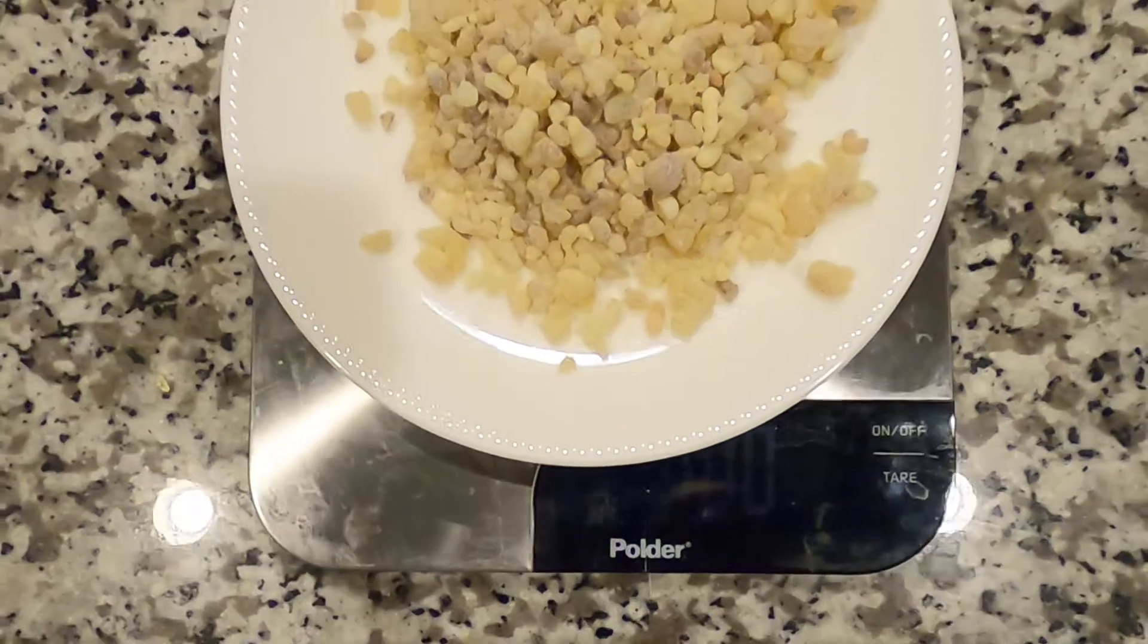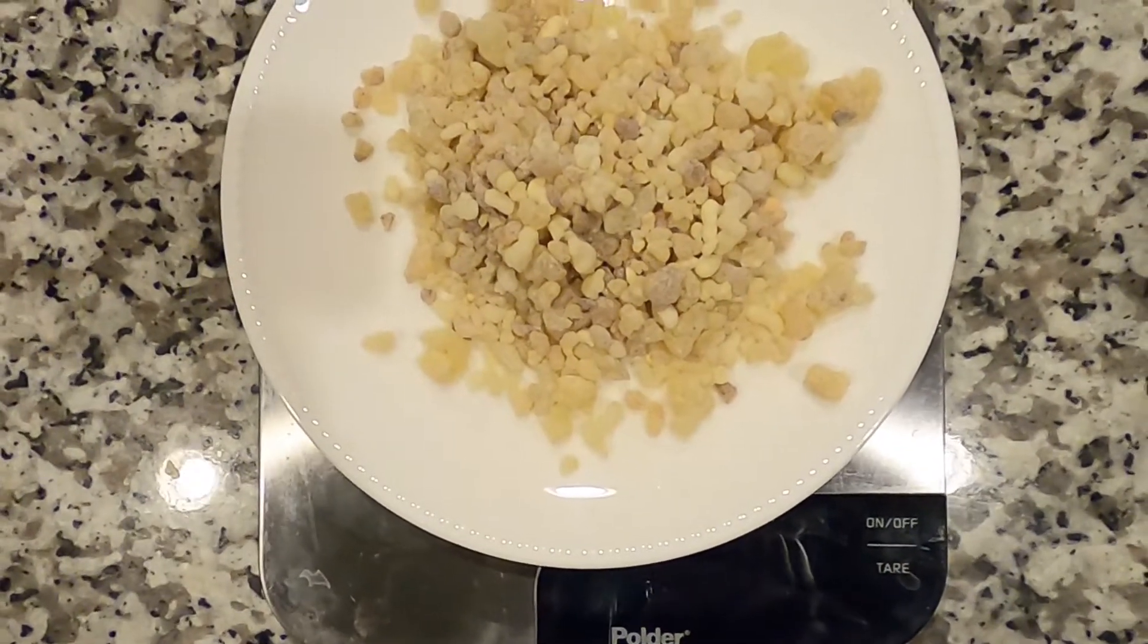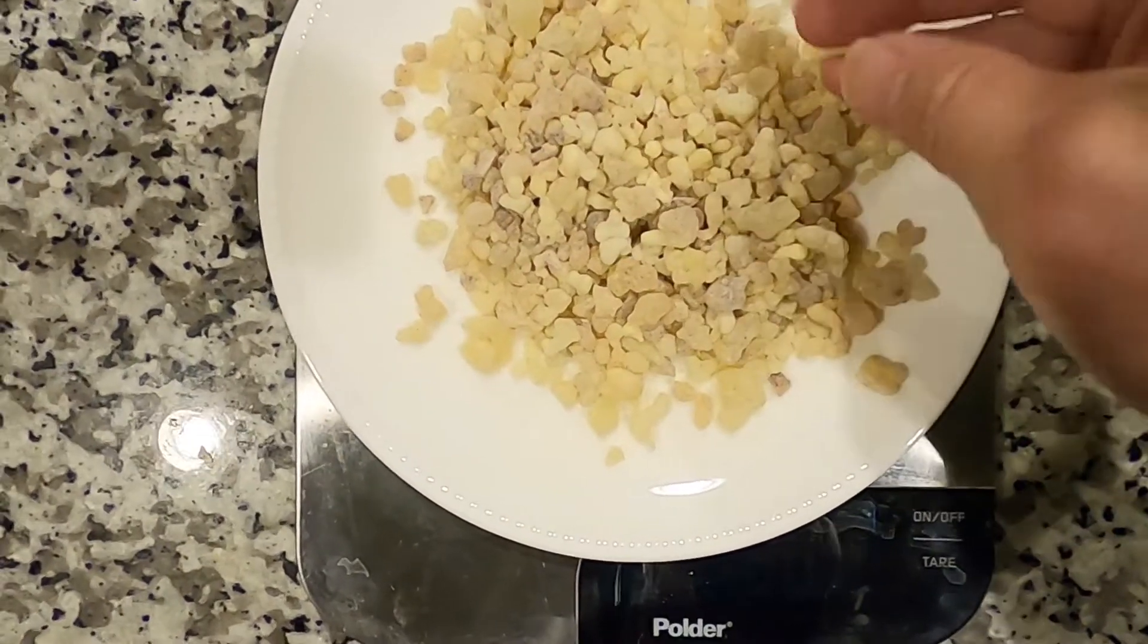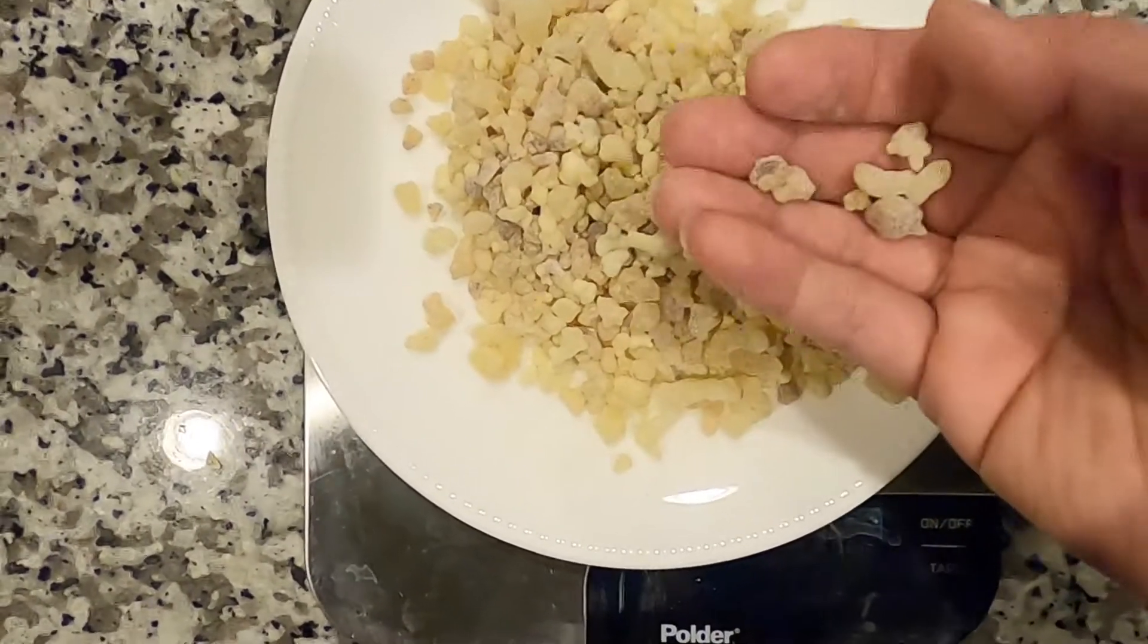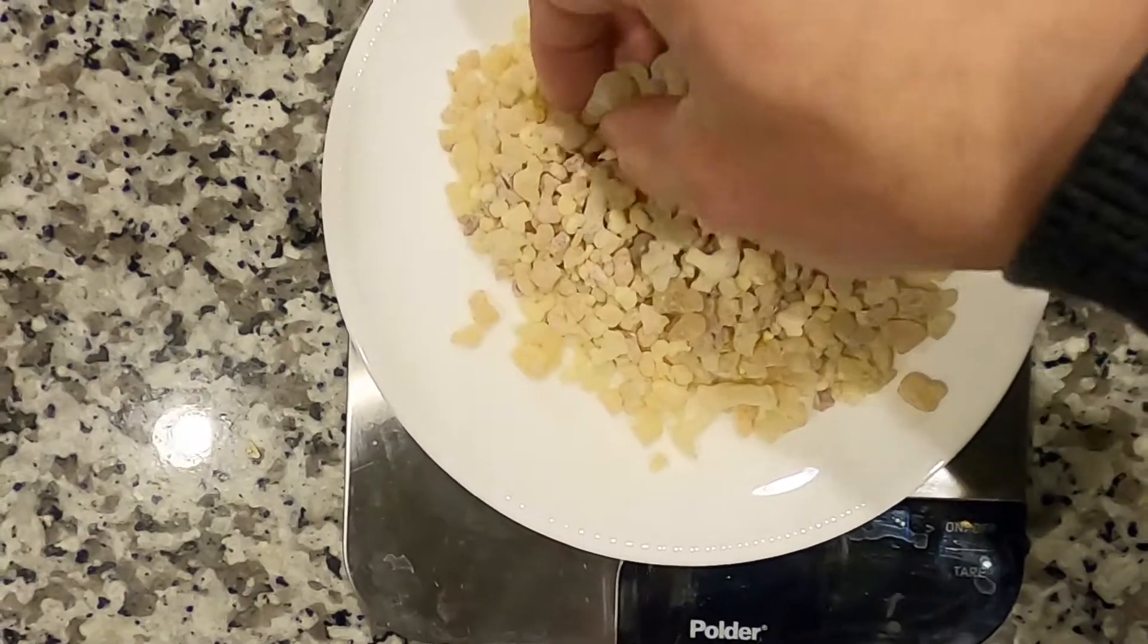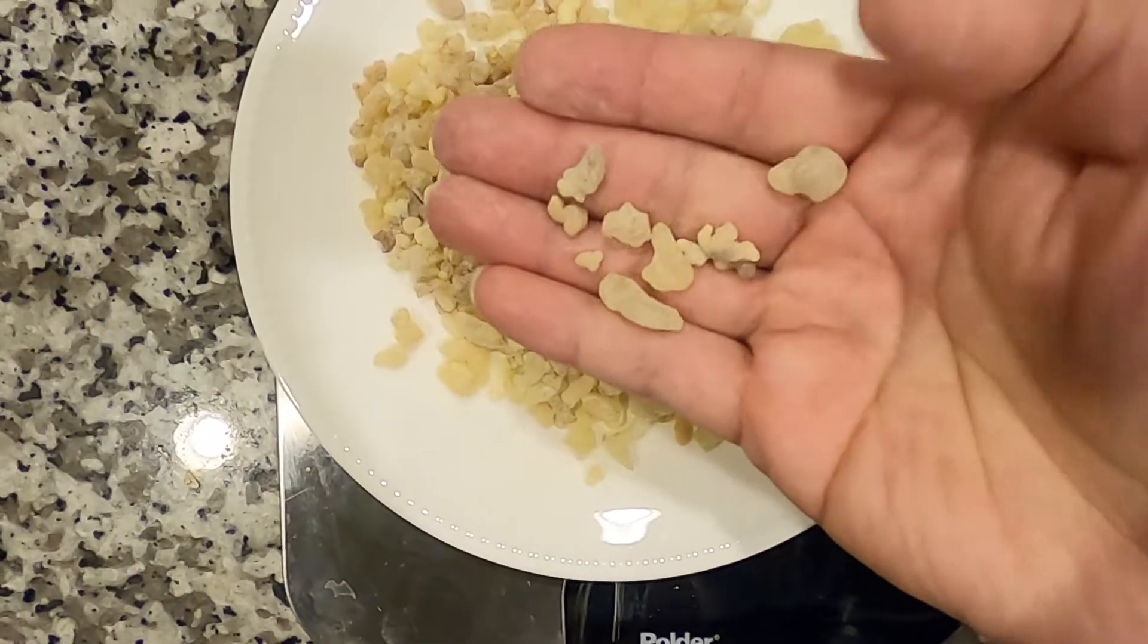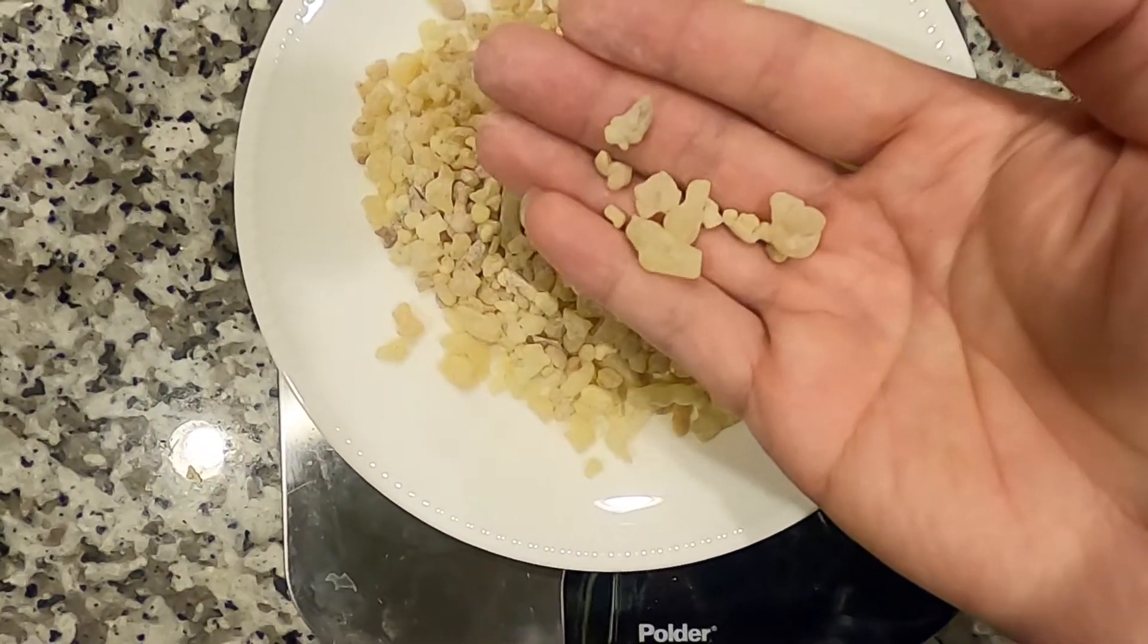So first I measure 100 grams of frankincense tears. The tears has a different size, some are bigger. Like that big and you see the smaller is much smaller than the bigger one.